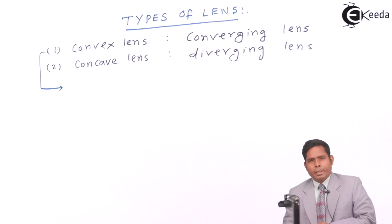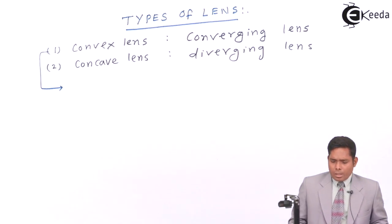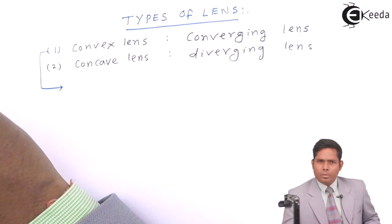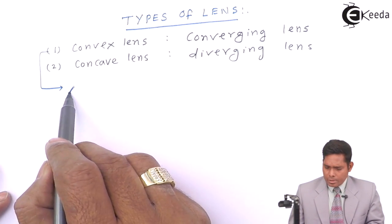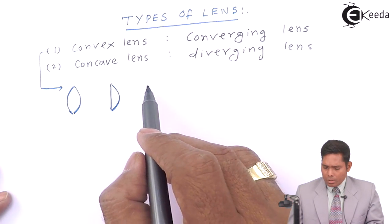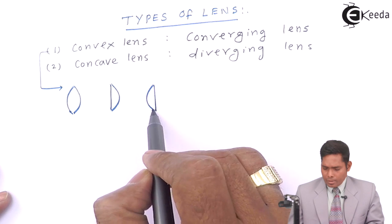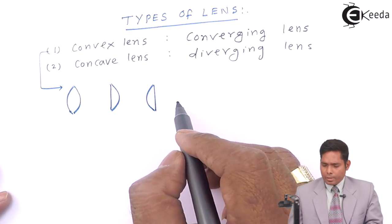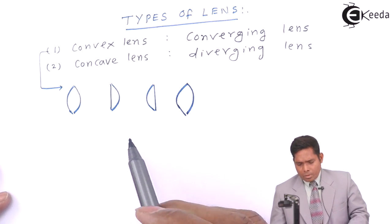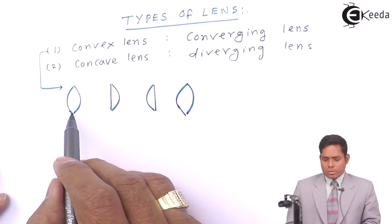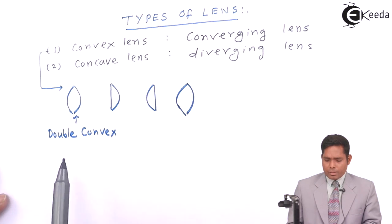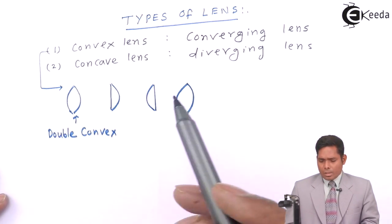In a convex lens, depending on the nature of the surfaces, I can have a combination of both curved surfaces, or one curved and one plain surface. It is possible that both surfaces are curved, or one surface is plain and another is curved. I can also have different radii of curvature. In this case, when both surfaces are curved, it is called double convex — both sides are convex and curved.